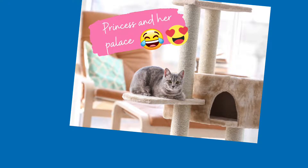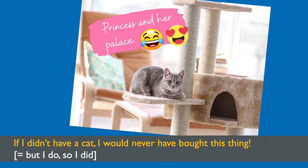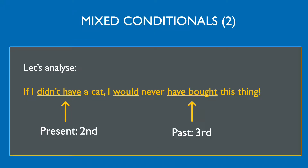Speaking of Spanish, when I got my cat I named her Catita — or Little Kitty — but I ended up changing it to Princessa because she's such a princess. She's always climbing on furniture and scratching it to pieces, so I got her a cat castle. "If I didn't have a cat, I would never have bought this thing" — it's a ridiculous thing to have in my living room, but I do have a cat so I did buy it. This is another mixed conditional: the if-clause is from the second conditional referring to the present situation, and the result clause is in the past using the third conditional.